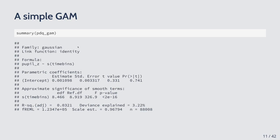The approximate significance of smooth terms tells you whether the EDFs — estimated degrees of freedom — are significantly different from one. EDFs are related to how wiggly the estimated curve is. The higher the EDFs, the more wiggly the curve. When EDFs equal one, that's just a straight line. So the p-value here tells you whether the curve is significantly non-linear. Other information about variation explained is also shown but won't be discussed today.